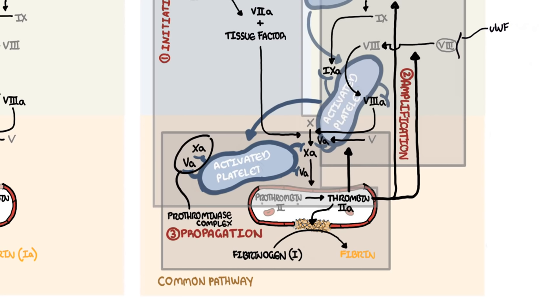The prothrombinase complex rapidly converts prothrombin into thrombin directly on platelets, which subsequently forms fibrin. In summary, the cell-based model involves initiation, amplification, and propagation, culminating in the prothrombinase complex generating a large amount of thrombin and subsequently a fibrin mesh that stops bleeding.